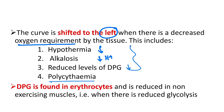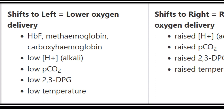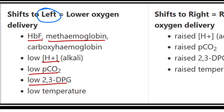2,3-DPG is found in erythrocytes and is responsible for oxygen delivery. It is reduced in non-exercising muscle when glycolysis is reduced. When 2,3-DPG is reduced, oxygen delivery capacity is reduced. Conditions causing a left shift include fetal hemoglobin, methemoglobin (abnormal hemoglobin), low hydrogen ion concentration, low partial pressure of CO2, low 2,3-DPG, and low temperature.